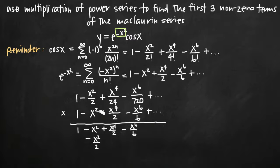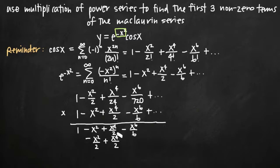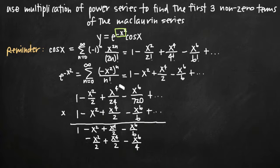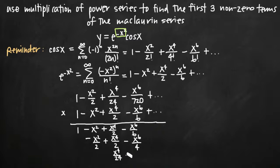Negative x squared over 2 times negative x squared gives positive x to the fourth over 2, placed under the x to the fourth column. Negative x squared over 2 times x to the fourth over 2 gives negative x to the sixth over 4. Repeating this with x to the fourth over 24: x to the fourth over 24 times 1 gives x to the fourth over 24, and x to the fourth over 24 times negative x squared gives negative x to the sixth over 24.